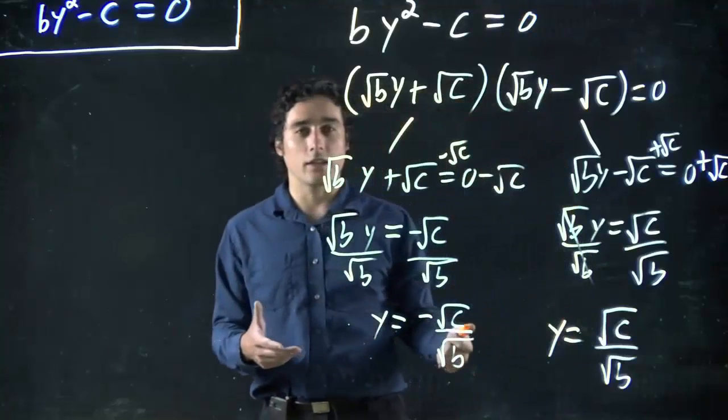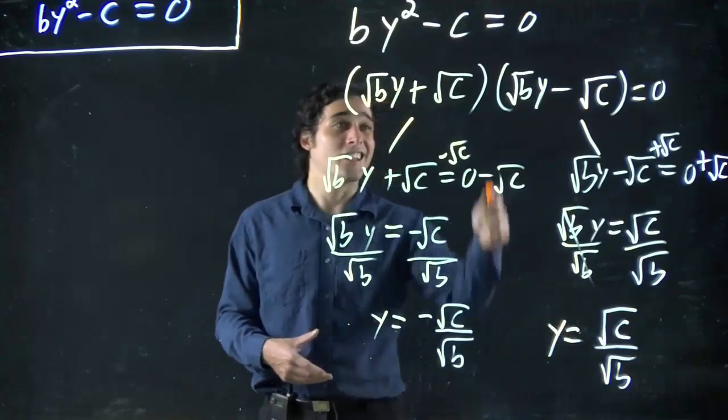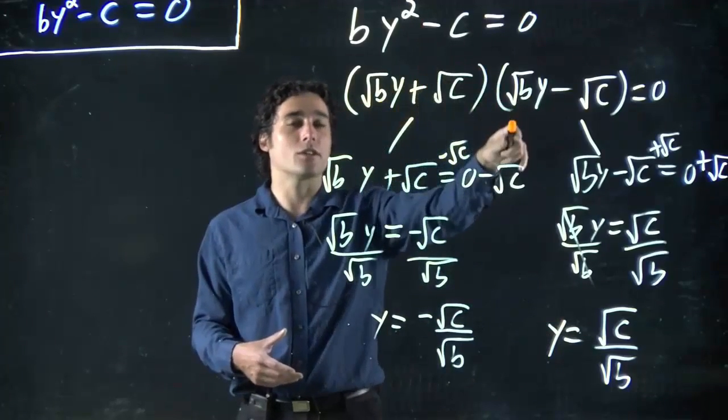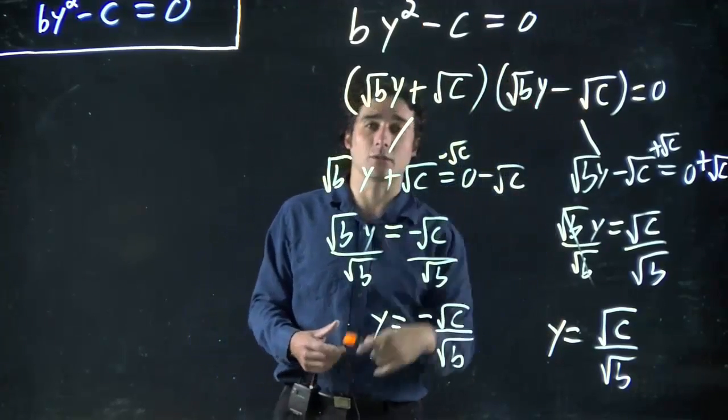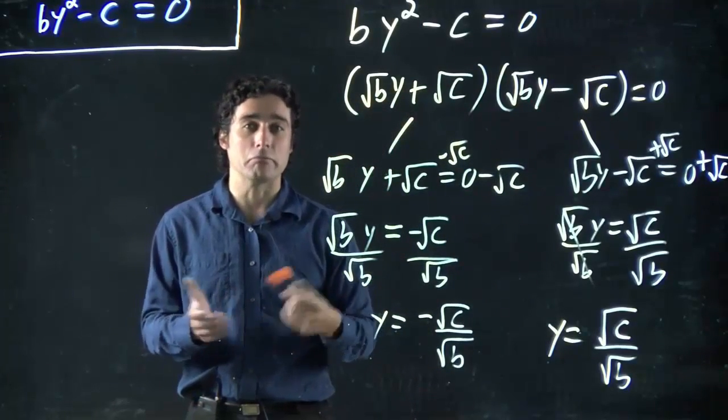So again, whatever these numbers may be, this is the solution we're always going to get. This is the factoring we're always going to get. Square root of the first plus square root of the second, square root of the first minus square root of the second. This is how it's going to work for all of these types of problems. So thank you.